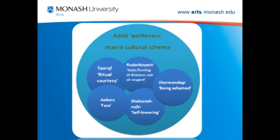I have tried to develop a working scheme for the study of pragmatic meaning in Persian. If you think of the macro-level schema of what we call ADAB, then there are certain cultural schemas that can be viewed as embedded within this macro-cultural scheme of ADAB. These include the cultural schemas of TARUF, RUDARBAYASTI, SHARMANDIGI, SHIKASTA NAFSI, ABERU, and so on.